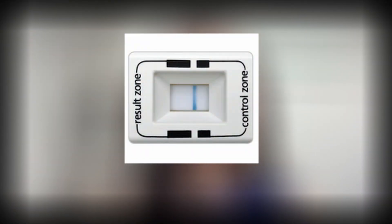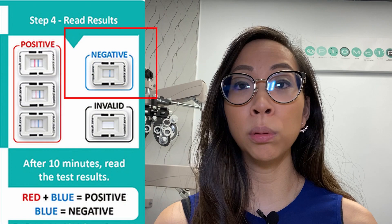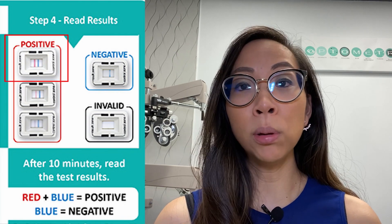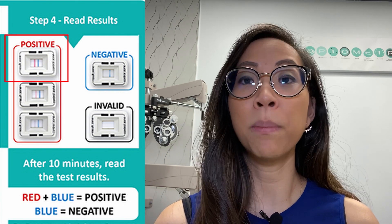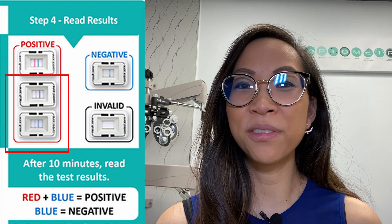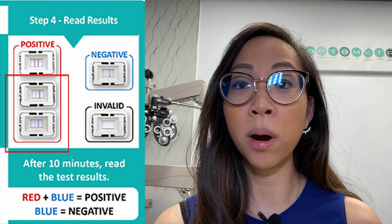The results are read in a similar way to at-home pregnancy tests — it essentially gives you a yes or no answer. If the test is done correctly, there will always be a blue control line. A solitary blue line indicates a negative result, but signifies an accurate and valid test. A blue line along with a solid red line is a positive test. A blue line along with an uneven, incomplete, or even a faint red line is also a positive test. A positive test indicates the presence of MMP9 greater than 40 nanograms per milliliter in the tear sample, and anything below that registers as negative.